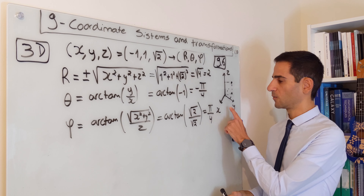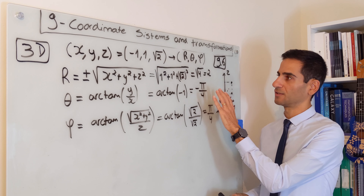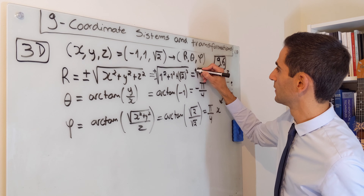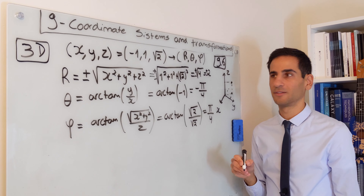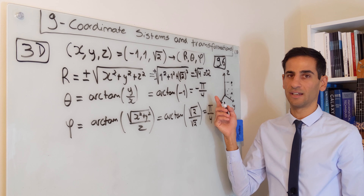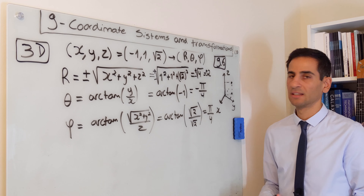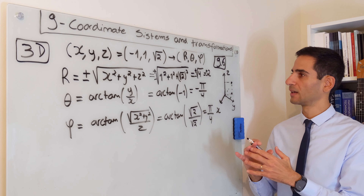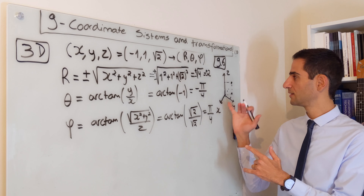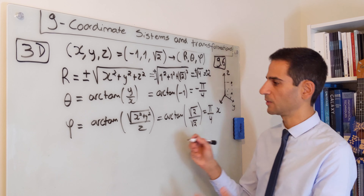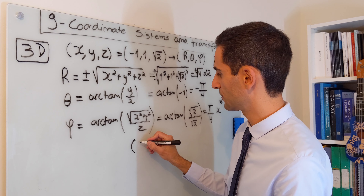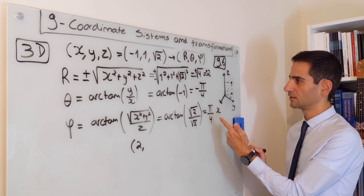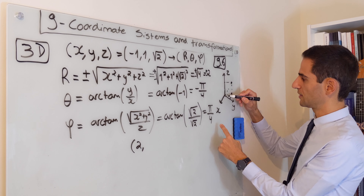For r, we get square root of 1 squared plus 1 squared plus square root of 2 squared. This ends up being square root of 4, that's 2. For theta, we're looking at arc tan of 1 over minus 1, that's minus 1, so the potential solution is minus pi over 4. And finally, for phi, we're looking at arc tan of square root of 2 over square root of 2, and a potential solution in this case is pi over 4.